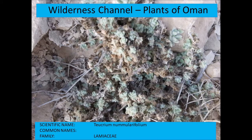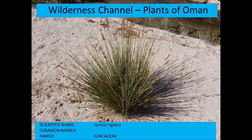Teucrium nummularifolium is also a very small creeping plant not always obvious to see. Juncus rigidus from the Juncaceae, or rush family — these have very spiny leaves and are typically found near water.